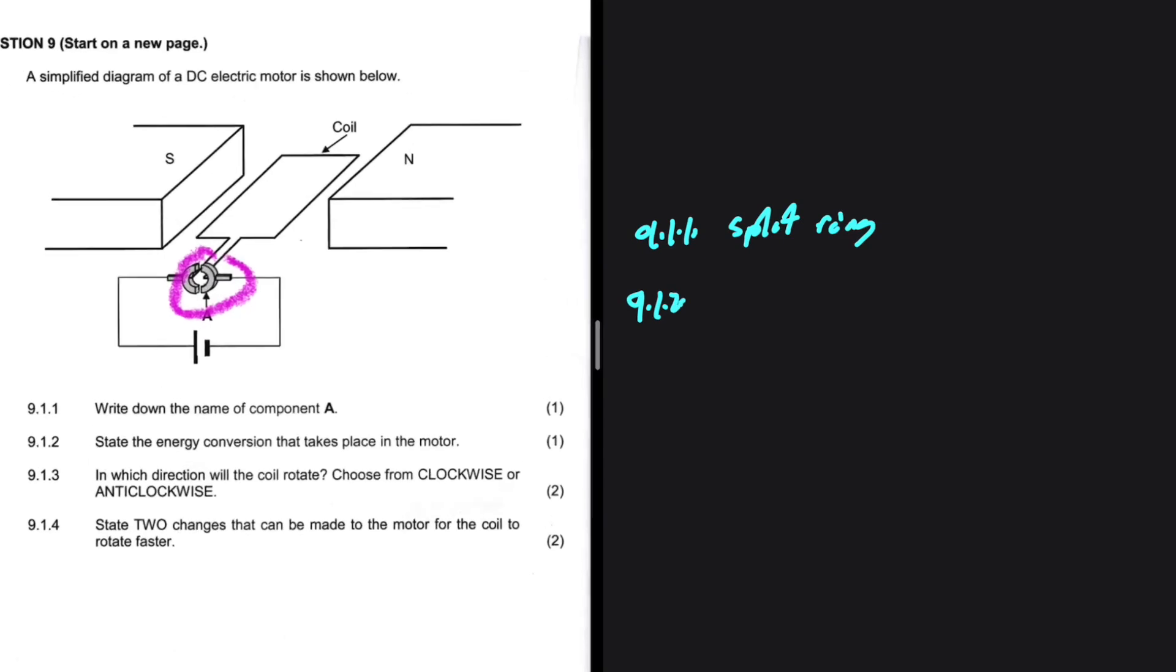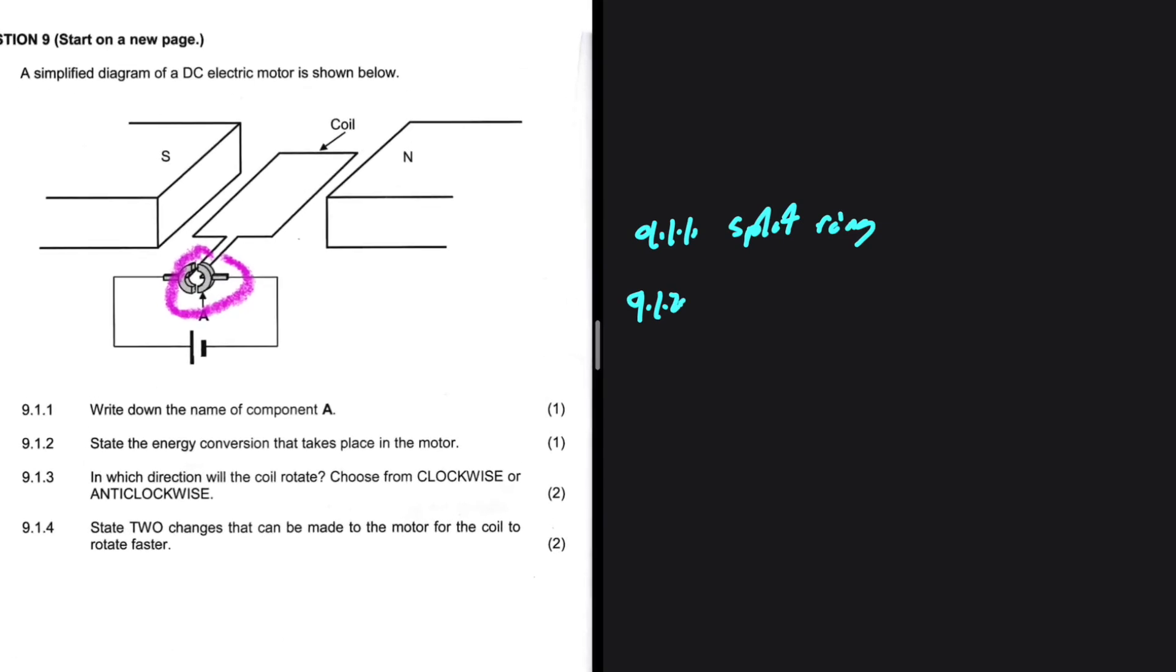9.1.2, state the energy conversion that takes place in the motor. So for every motor, we have electrical energy to mechanical energy. We have a power source here that is providing us with electrical energy, and we convert that electrical to mechanical. That's what you were supposed to write.